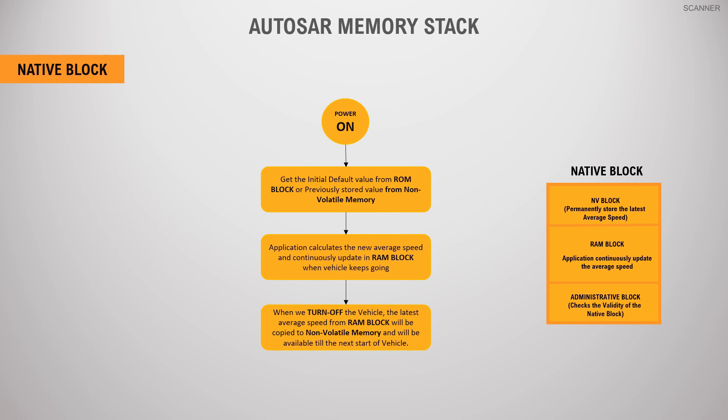Finally, when the vehicle is stopped, the average speed from the RAM block is stored in the NV block, and during shutdown the NV block data is stored in memory for the next calculation. Next time when the vehicle starts, the application reads data from the NV block to the RAM block instead of reading from the ROM block, and this continues until the user resets the average value to zero again.